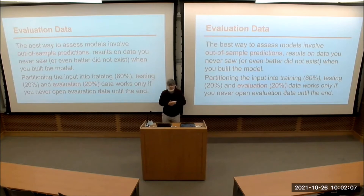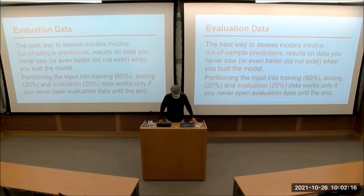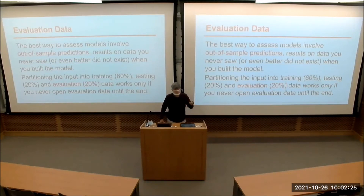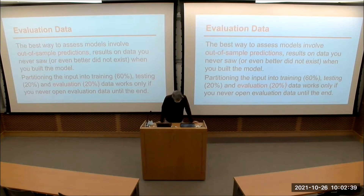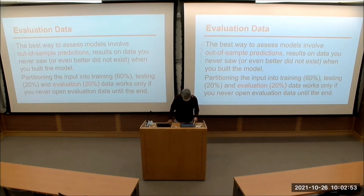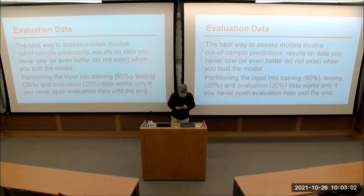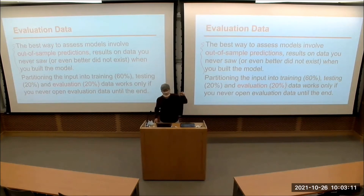When trying to evaluate a system, there are issues about what data you evaluate it on. If you evaluate on the training data, you're trying to make predictions about things you already know the answer to — systems often look much better than they really are when training data works its way into the evaluation. The best way to tell how good a model is: get out-of-sample predictions — data you didn't know about when building your model.